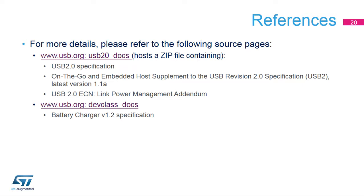For complete USB specification documents, please refer to USB.org. The USB 2.0 document home page has a zip file containing the USB 2.0 and OTG 2.0 specifications and an ECN for LPM. The USB device class documents page has the battery charger specification.